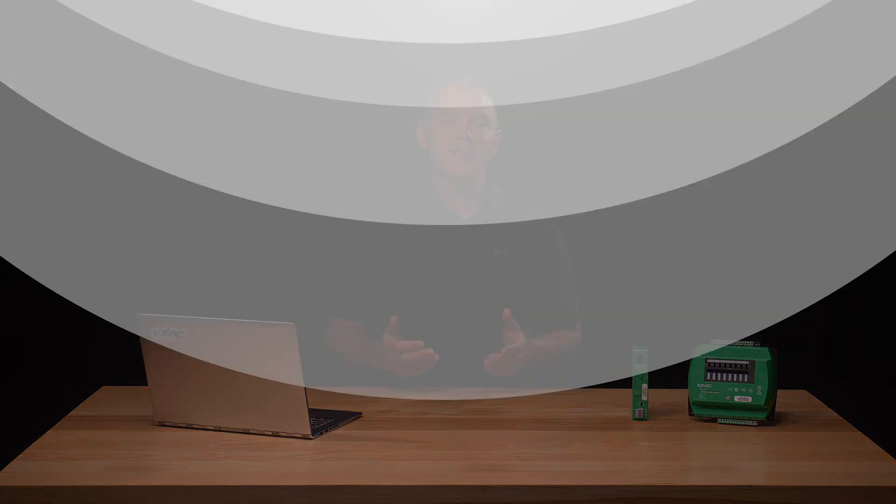To combat network inefficiencies in these systems, we use a concept called tiering. Let's say all the controllers in the system need to know the outside air temperature.